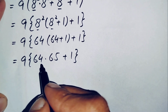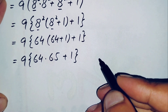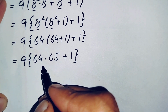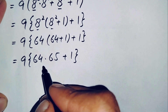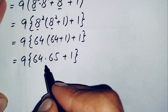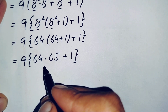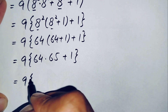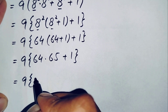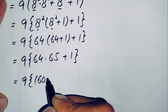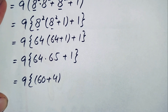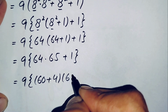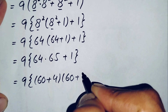We need to multiply 64 times 65. I will multiply these two numbers with a tricky and simple method without rough work. We can write 64 as (60+4) and 65 as (60+5).